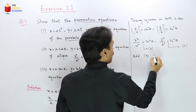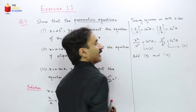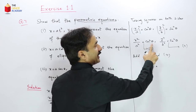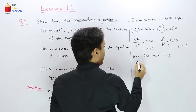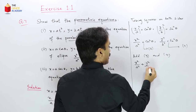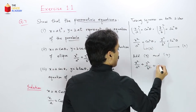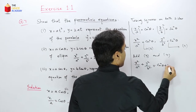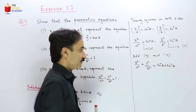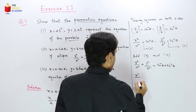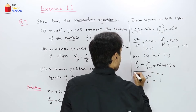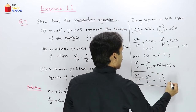Adding equations 3 and 4: x²/a² + y²/b² = cos²θ + sin²θ = 1. Since cos²θ + sin²θ = 1, we get x²/a² + y²/b² = 1. This is the equation of an ellipse — proved.